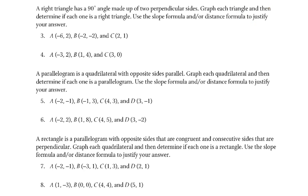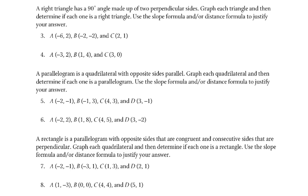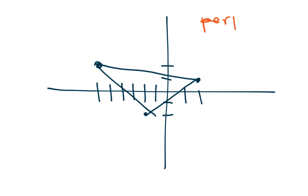Problems 3 and 4 say: a right triangle has a 90-degree angle made up of two perpendicular sides. Graph each triangle and determine if each one is a right triangle. So we graph the points: negative 6, 2; negative 2, negative 2; and 2, 1. The easiest way is to find the slope of each side and see if any two are perpendicular.